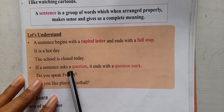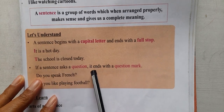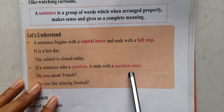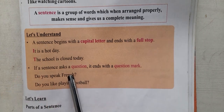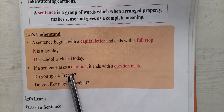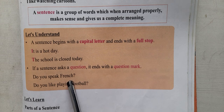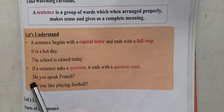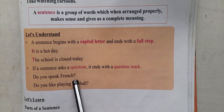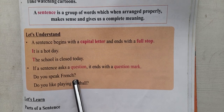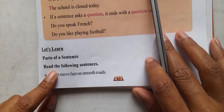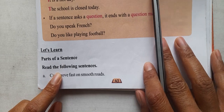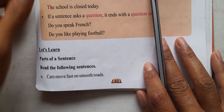If a sentence asks a question, it ends with a question mark. When a sentence asks a question, a question mark is placed at the end. So a sentence can start with a capital letter and end with either a full stop or a question mark. A sentence has two parts — let's look at those parts now.